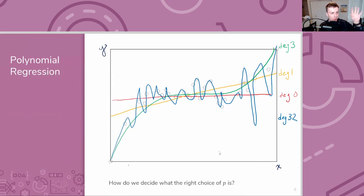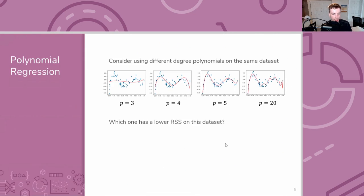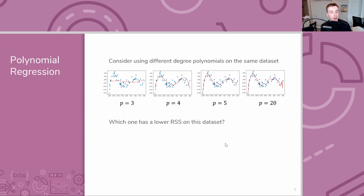Now I want to talk about assessing performance. Remember in the last video when I was introducing polynomial regression — you can extend linear regression using extra features with polynomial expansions of your input. You can make a degree one polynomial, degree three, degree zero, or go all the way to degree 32. The question is: how do you choose the right degree polynomial? Consider one dataset but fitting many different degree polynomial models: degree three, four, five, and twenty. A great way to define quality of a predictor is the residual sum of squares.